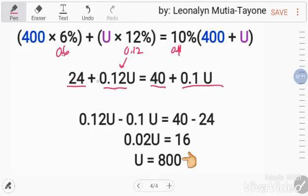Now, transpose again. So, here, 40 minus 24. Subtract there, that cancels, subtract here. This 0.12U and 0.1U, they're here now. Let's combine them.